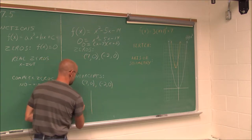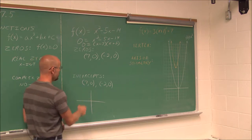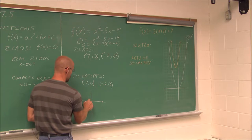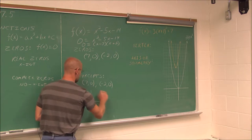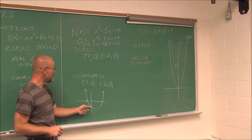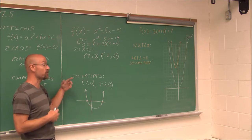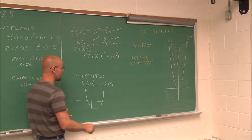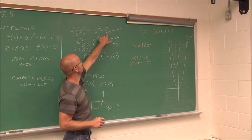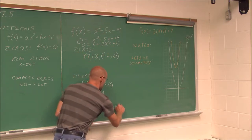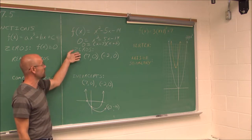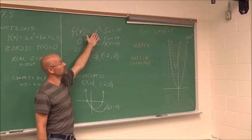Because the values are real, these zeros result in x-intercepts. By finding the zeros of the function, I can determine that the graph has x-intercepts at (7, 0) and (negative 2, 0). To sketch a graph, I know a parabola has that U shape with those two x-intercepts. I can also find the y-intercept: setting x equal to 0, with both x terms becoming 0, I get negative 14. So the y-intercept is (0, negative 14). Those are all the intercepts.